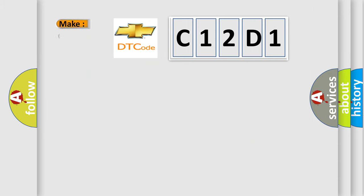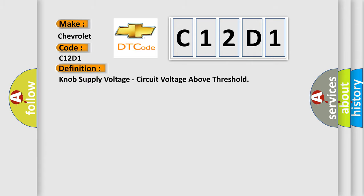So, what does the diagnostic trouble code C12D1 interpret specifically for Chevrolet car manufacturers? The basic definition is Knob supply voltage, circuit voltage above threshold.